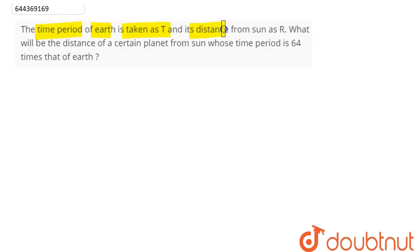is taken as T and its distance from sun as R. What will be the distance of a certain planet from sun whose time period is 64 times that of Earth?